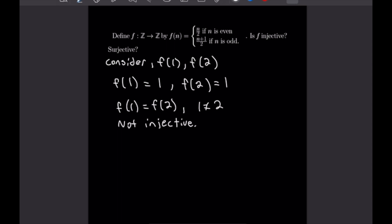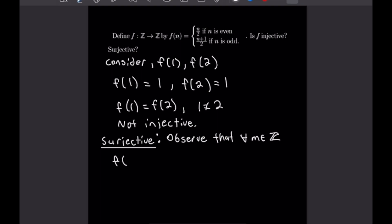For surjectivity, we can prove that very easily. All we want to prove is that our function can map to all of the integers. Observe that for all m in the integers, f of 2m will equal m. So that proves surjectivity — we can map to all integers using this method. This function is not injective, but it is surjective.